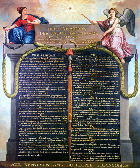Constitutional law deals with the fundamental principles by which the government exercises its authority. In some instances, these principles grant specific powers to the government, such as the power to tax and spend for the welfare of the population. Other times, constitutional principles act to place limits on what the government can do, such as prohibiting the arrest of an individual without sufficient cause.